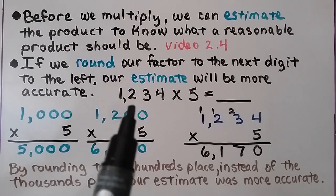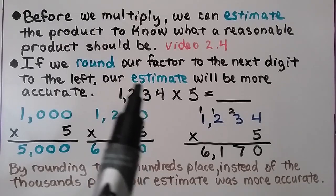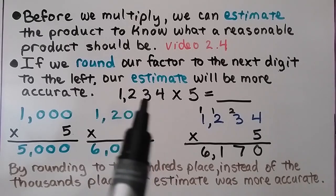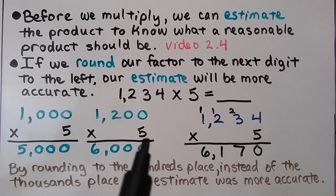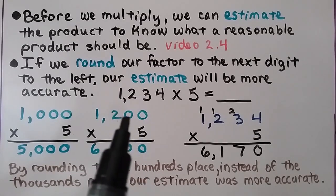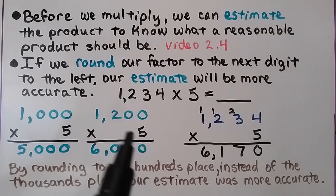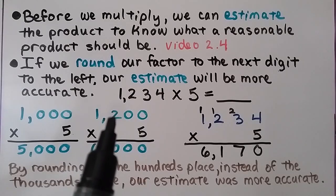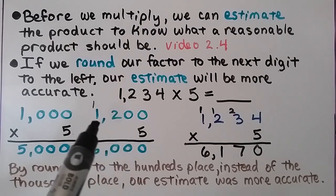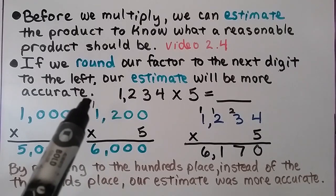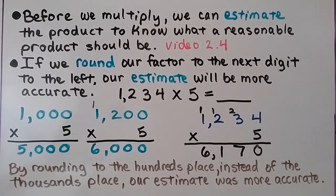But if we round to the hundreds place, the 3 tells the 2 to stay the same, and they become zeros, giving us 1,200. When we multiply 5 times 1,200: 5 times 0 is 0, 5 times 0 is 0, 5 times 2 is 10 — we regroup the 1 and put the 0 down. Then 5 times 1 is 5, plus 1 more is 6. We get 6,000.